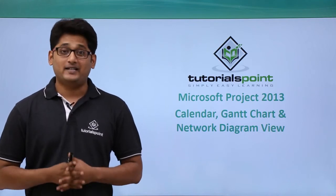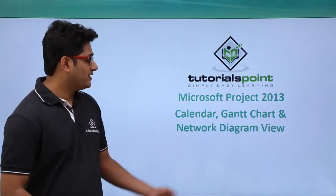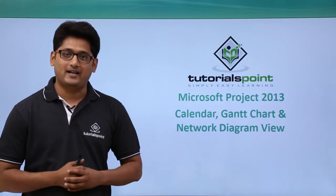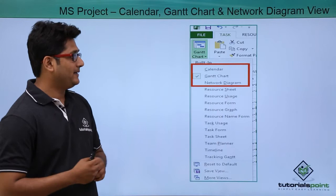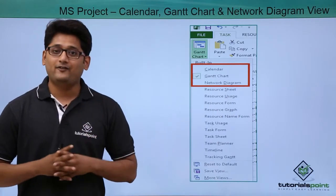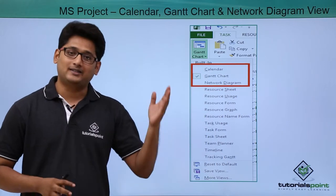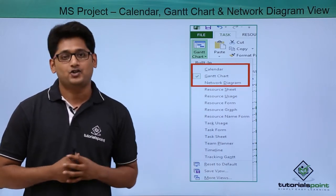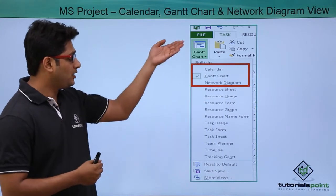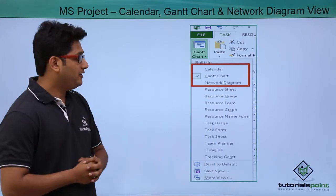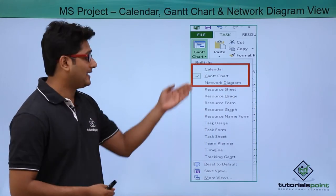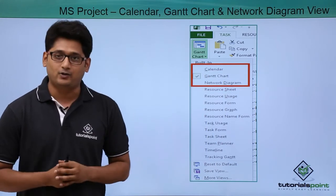Hello guys, welcome to TutorialsPoint. In this video we are going to cover the calendar view, the Gantt chart view, and the network diagram view. Now, where can you find these views? You have to go to the Task tab, and under the Task tab you can see a Gantt chart icon. If you click on this drop-down menu you can see all these options. We will be specifically talking about the first three: the calendar, Gantt chart, and the network diagram view.